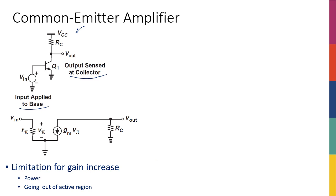We haven't forgotten the discussions about biasing from last week. This Vin that we have here is not only an AC signal — it's the addition of a DC plus AC component. If I plot it versus time, I can say that Vin equals capital Vin plus small vin, meaning it has both DC and AC components. Let's say it has a DC of 0.7 volts to keep the transistor on, and on top of that it has a sinusoidal signal.